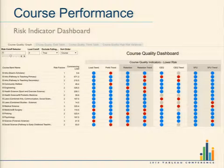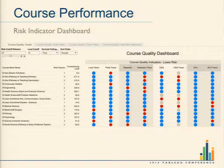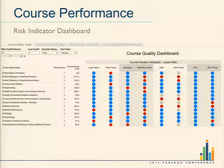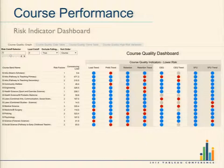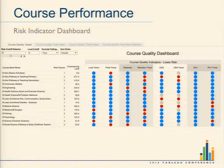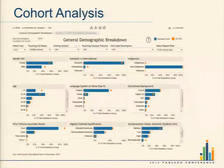We've also got an overall risk indicator dashboard around our courses. We decided on around six to eight metrics, and if you're striking out on a certain number of these metrics, then you're at risk and we need to seriously think about what you're doing with this course.